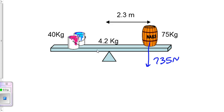We have a 4.2 kilogram board that weighs at 41.2 newtons downwards, and that's a distance of 0 meters from the fulcrum. And some paint, about right here, 40 kilograms, weighing in at 392 newtons.